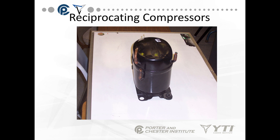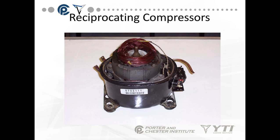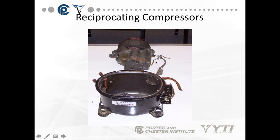You cannot service a hermetic compressor without cutting the shell open — the compressors are disposable. They're cooled with suction vapor. This is an example of a reciprocating compressor opened at the weld joint. You can see the motor, the windings, and everything inside. The start components go out here, and you have lines directly welded into the system. Down here, surrounding the motor, is where your valves are.